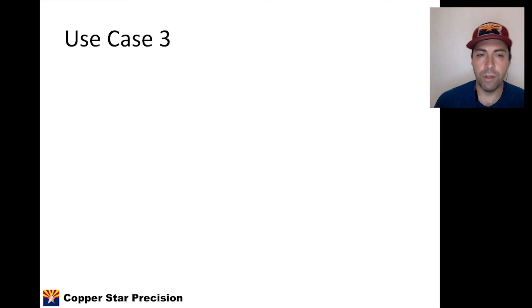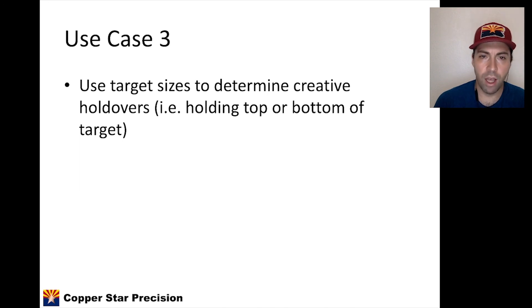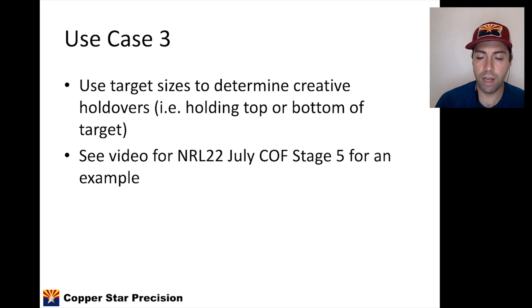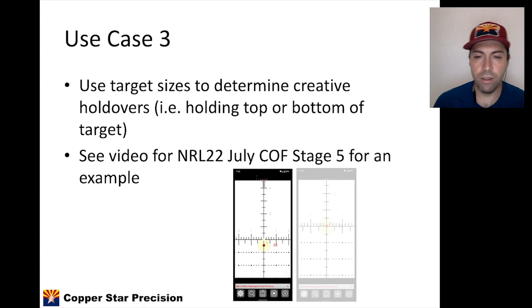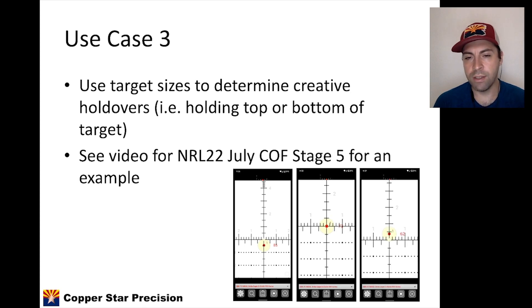Use case three is going to use target sizes to determine creative holdover strategies, holding the top or the bottom of the target. I discussed this in the NRL22 Course of Fire Stage 5 and just a preview from that video. I essentially dialed for a certain target and knowing the target sizes, I knew because of the target size, I could hold over and just hit top of the target, center of the target, bottom of the target, boom, boom, boom. I didn't have to think about it. I didn't have to look at my hash marks in my reticle. I could use the center hold and by aiming at different parts of the target, I was able to engage those targets successfully. So I'll put a link to that up here somewhere if you want to see an advanced use of this strategy knowing target sizes.